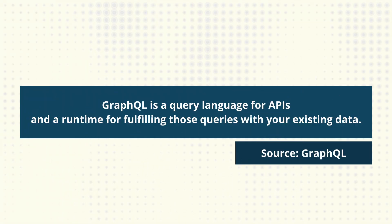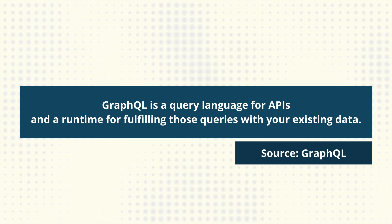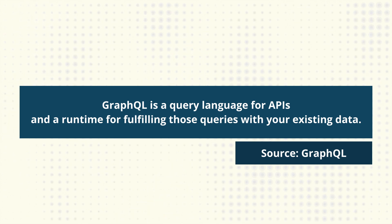Let's start this video by answering the question: what is GraphQL? GraphQL is a query language for APIs and a runtime for fulfilling those queries with your existing data. In simpler terms, GraphQL gives you the ability to retrieve or modify existing data from an application by making queries or mutations.